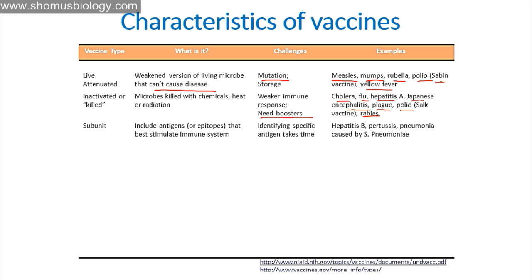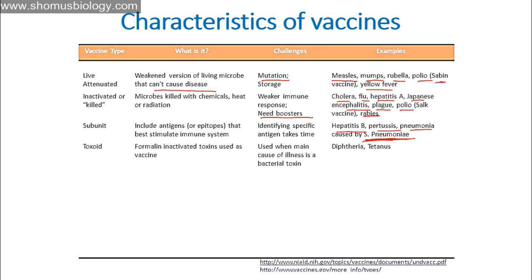Subunit vaccines include antigens that best stimulate the immune system, sometimes with adjuvants. The challenge is that identifying a specific antigen from a whole microorganism is time-consuming and expensive to develop. Examples include hepatitis B, pertussis, and pneumonia caused by Streptococcus pneumoniae. Toxoid vaccines use formally inactivated toxins and are used when the main cause of illness is a bacterial toxin — for example, tetanus or botulism — where the disease is caused only by the toxin, not the bacterial presence itself.